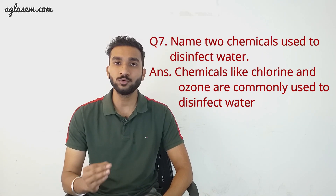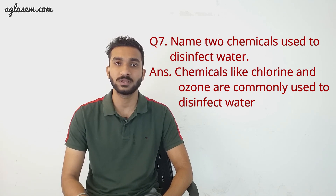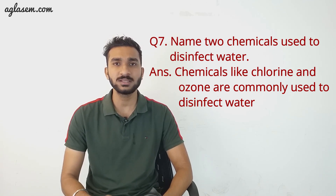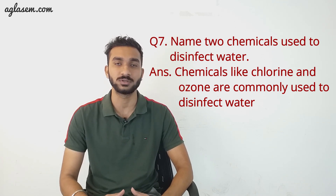Question 7: Name two chemicals used to disinfect water. Chemicals like chlorine and ozone are commonly used to disinfect water.